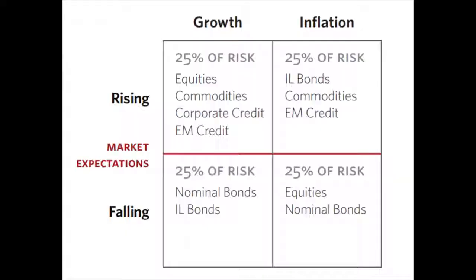The key is to position your portfolio so that whatever happens, some assets move in opposite directions and you get ahead year by year, grasping returns that come from volatility and from assets' natural returns in the form of dividends. It's crucial to allocate 25% of your portfolio risk to each of the four economic environments. So in an environment of growth and rising inflation, you have equities, commodities, corporate credit, and emerging market credit — and you allocate 25% of your portfolio risk towards one of these four quadrants.